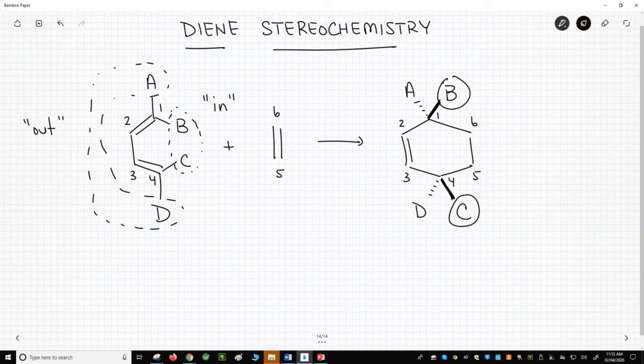They are both up on the ring. The two out groups, A and D, are cis. They are both down.